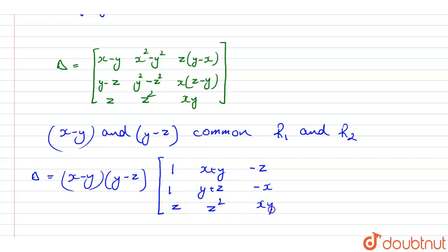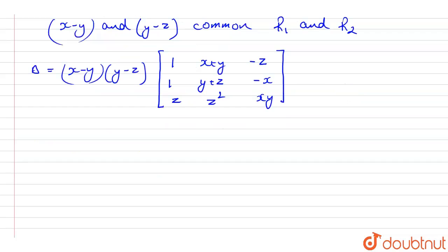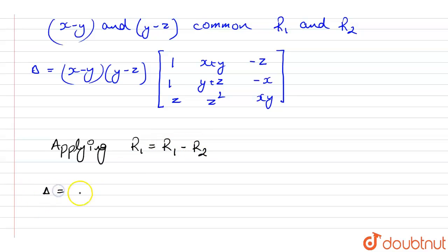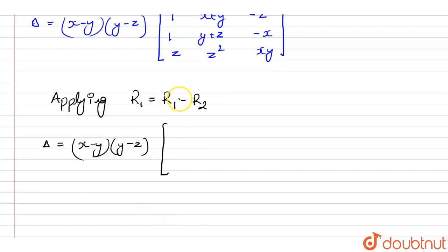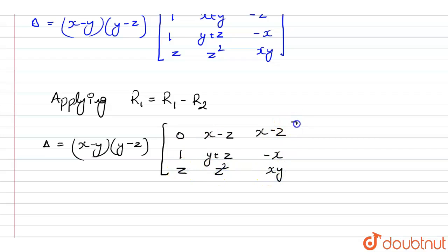Next, we apply R1 = R1 − R2. This gives row 1 as: 1−1 = 0, x+y−(y+z) = x−z, and −z−(−x) = x−z. Row 2 remains: 1, y+z, −x. Row 3 remains: z, z², xy.